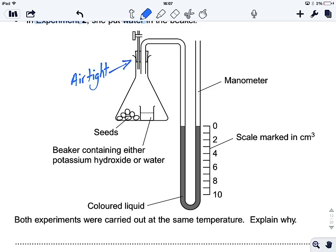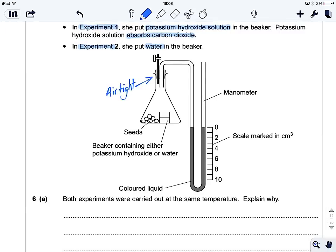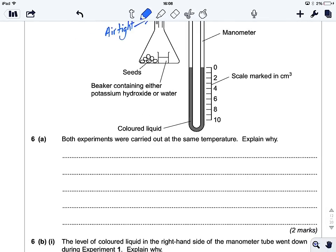Then we've got some coloured liquid in a U-tube and a scale marked in centimetres cubed, so we're measuring the volume that something moves. Let's have a look at the question. The first one, both experiments were carried out at the same temperature. Explain why.